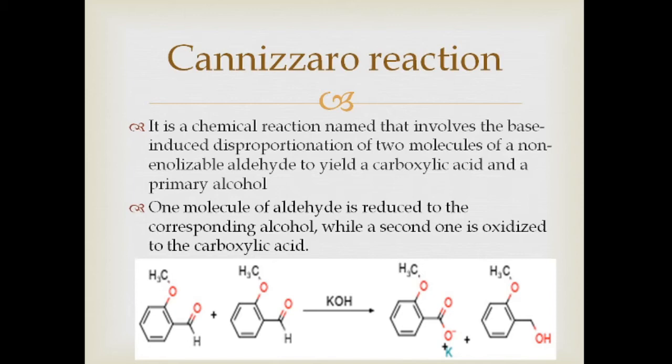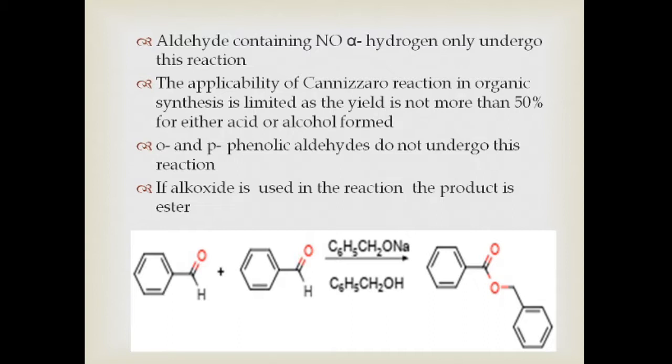An example is given: orthomethoxybenzaldehyde is taken, and when two molecules of that substituted benzaldehyde are taken in the presence of alkali, that is KOH, one molecule of alcohol — benzyl alcohol — and another molecule of the respective salt of acid is obtained. These reactions are applicable only to aldehydes containing no alpha hydrogen, and a limitation is that yields are very less.